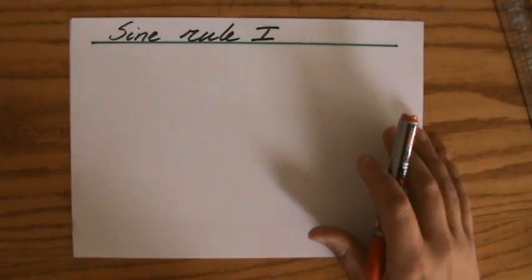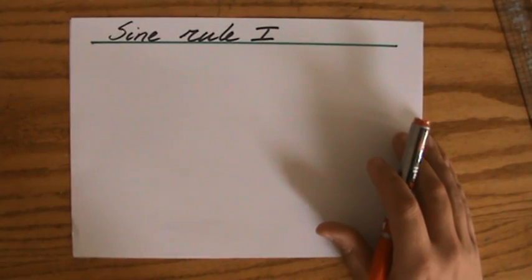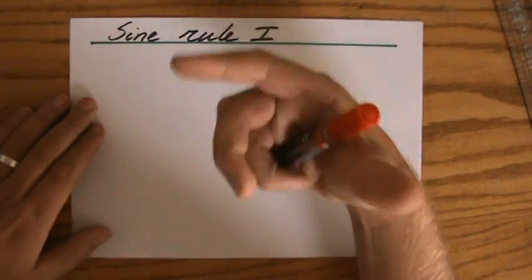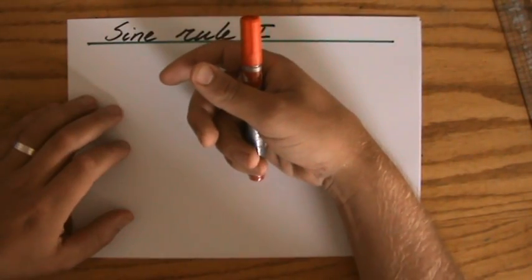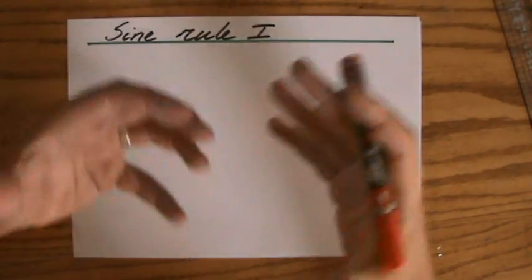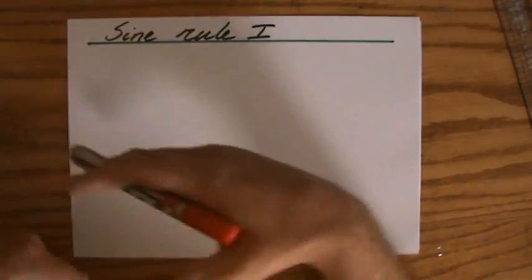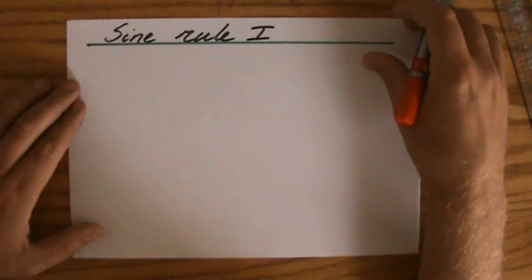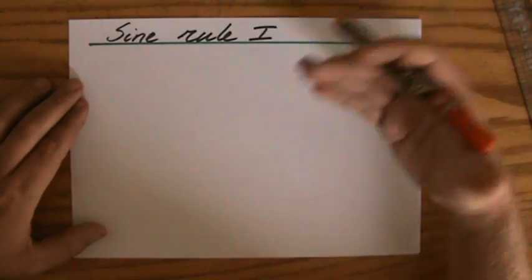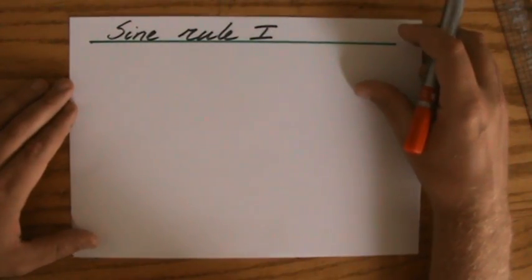Alright, we have been doing trigonometry, and trigonometry helps us to calculate lengths and angles in right-angled triangles. In triangles, we have one angle of 90 degrees. And we have the sine, the cosine, and the tangent, which are the three ratios we use to calculate those lengths and angles.